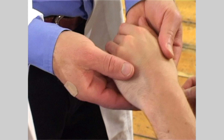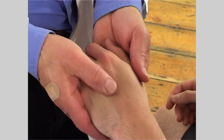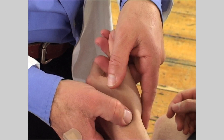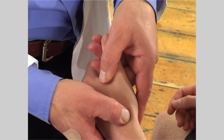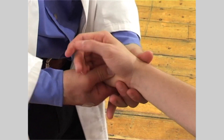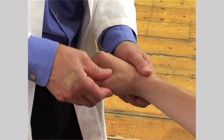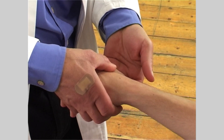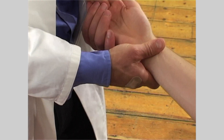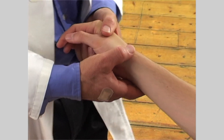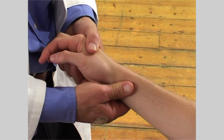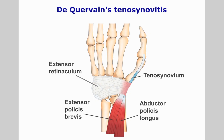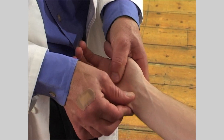Then palpate the intrinsic muscles and the various anatomical structures like the scaphoid, the anatomical snuffbox and the carpals. Feel the first metacarpophalangeal joint and the tendons for nodule formation. Examine the abductor pollicis longus and extensor pollicis brevis for evidence of de Quervain's synovitis. Feel the ulnar nerve for the tunnel of Guyon.